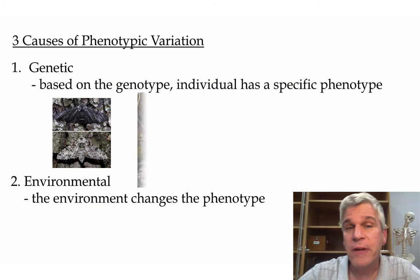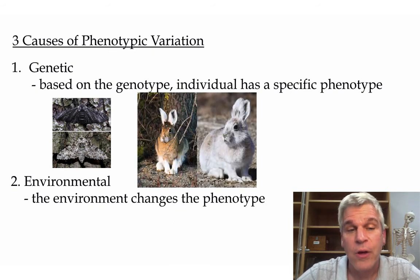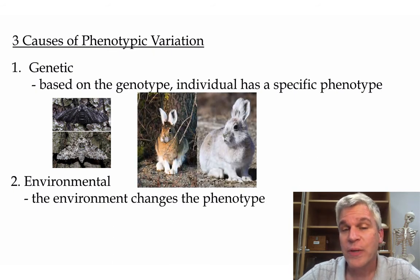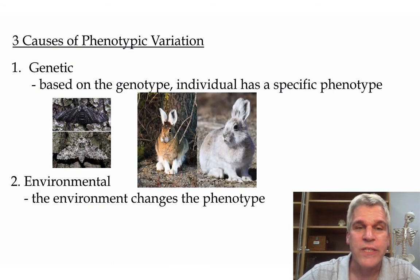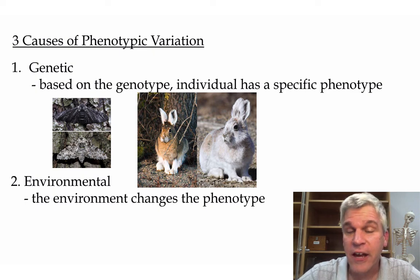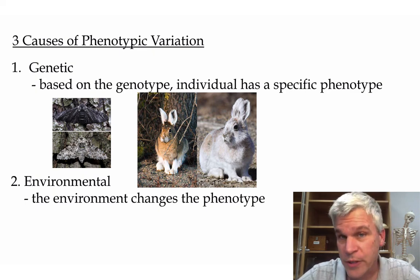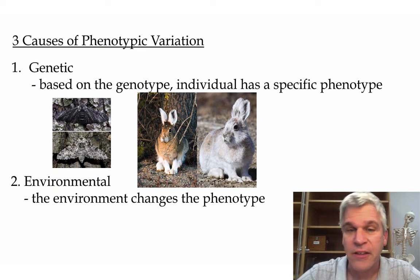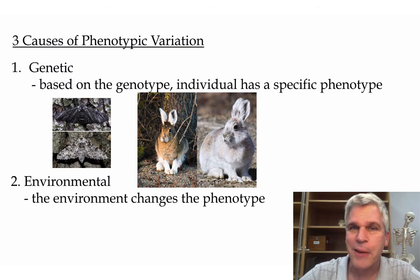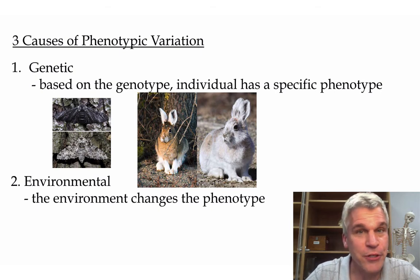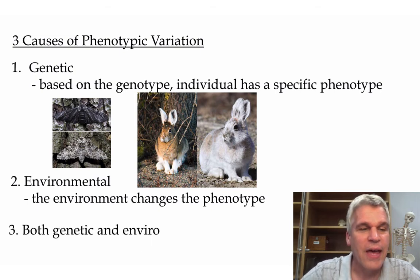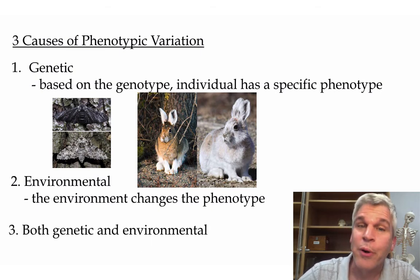It could be environmental, where the environment changes the phenotype. In this example, we see the arctic hare in the summer versus the winter, and the color of the fur changes based on the temperature. And sometimes it's both — genetic and environmental.